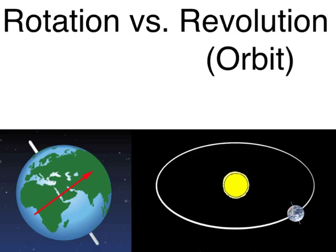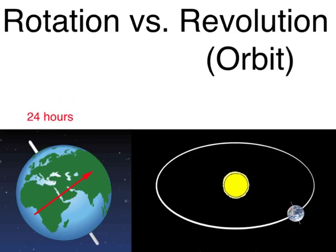A rotation is when the Earth spins around its axis. The Earth spins in this direction. One full rotation is 24 hours — it takes the Earth 24 hours to spin all the way around. This is what creates night and day.